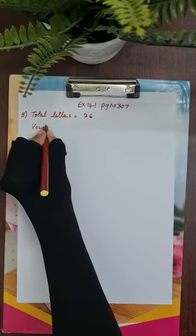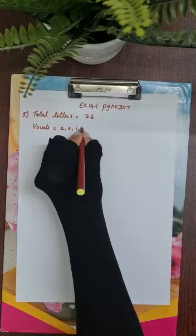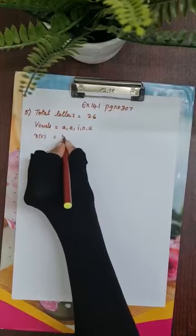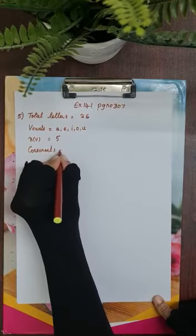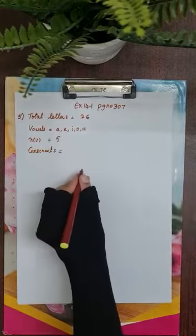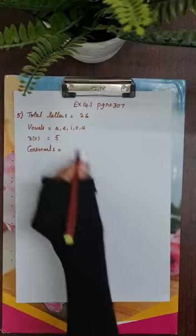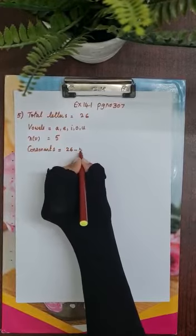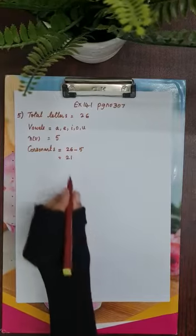Now how many vowels do we have? The vowels are A, E, I, O, U — there are five vowels. Now what are consonants? An alphabet which is not a vowel is a consonant — B, C, D, F, G, H till Z, apart from the vowels. So the consonants are 26 minus 5, which equals 21.